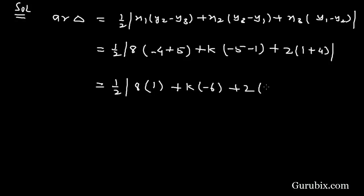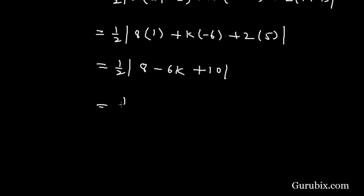This equals 1/2 |9 - 6k + 10| = 1/2 |-6k + 18|. We are given that these three points are collinear.